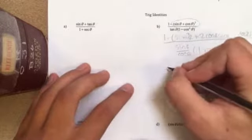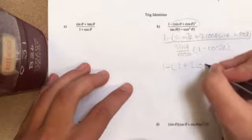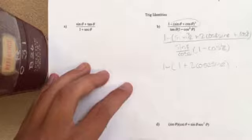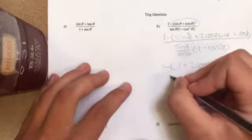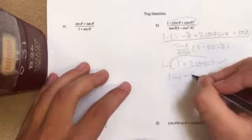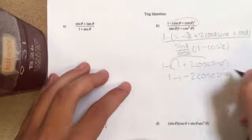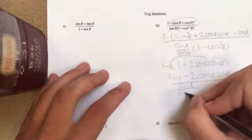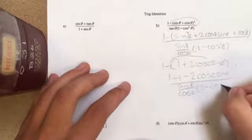So we can rewrite it as 1 minus (1 plus 2 cosine theta sine theta). Now we need to distribute this invisible negative 1, and it becomes 1 minus 1 minus 2 cosine theta sine theta, over sine theta cosine theta times (1 minus cosine squared) in parentheses.